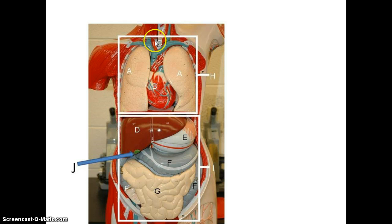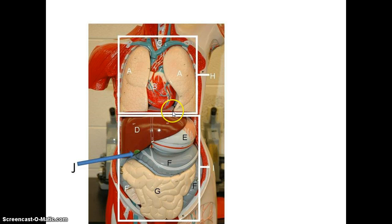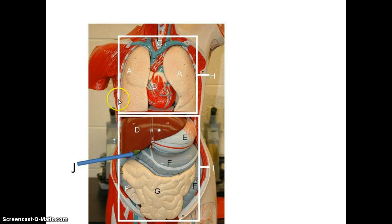We'll start up here. This blue tube right here is the trachea. These are the lungs. This is the heart. The diaphragm is a muscle that runs right here. The square here shows you that above the diaphragm are part of the thoracic cavity. This square down here is showing you the abdominal pelvic cavity, but that diaphragm — that muscle you'll see on the bottom of that lung — is the diaphragm.